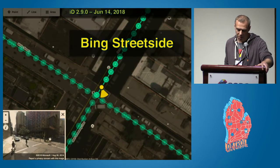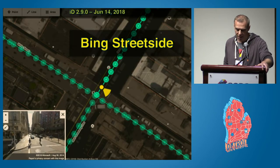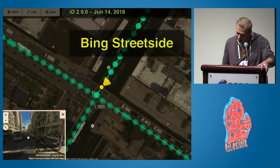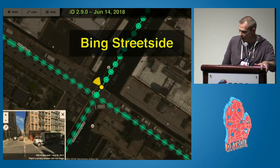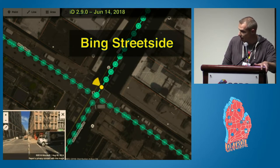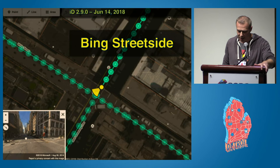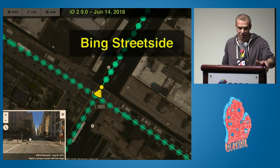In June, with version 2.9, we added support for Bing Street Side. This brings in 360-degree panoramic imagery across large portions of the U.S., U.K., France, and Spain. Thanks to Jubal Harpster and his team from Microsoft for making this possible.